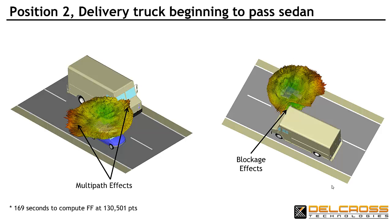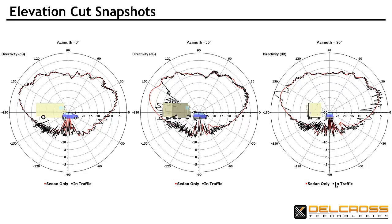Next, the delivery van is pulling up along the car. Both blockage and multipath become even more pronounced. Looking at the elevation cuts, we can see both blockage and multipath reinforcement quite clearly. Multipath nulls are also appearing near the horizon in the direction away from the van, which you can see most clearly in the graphic on the right.